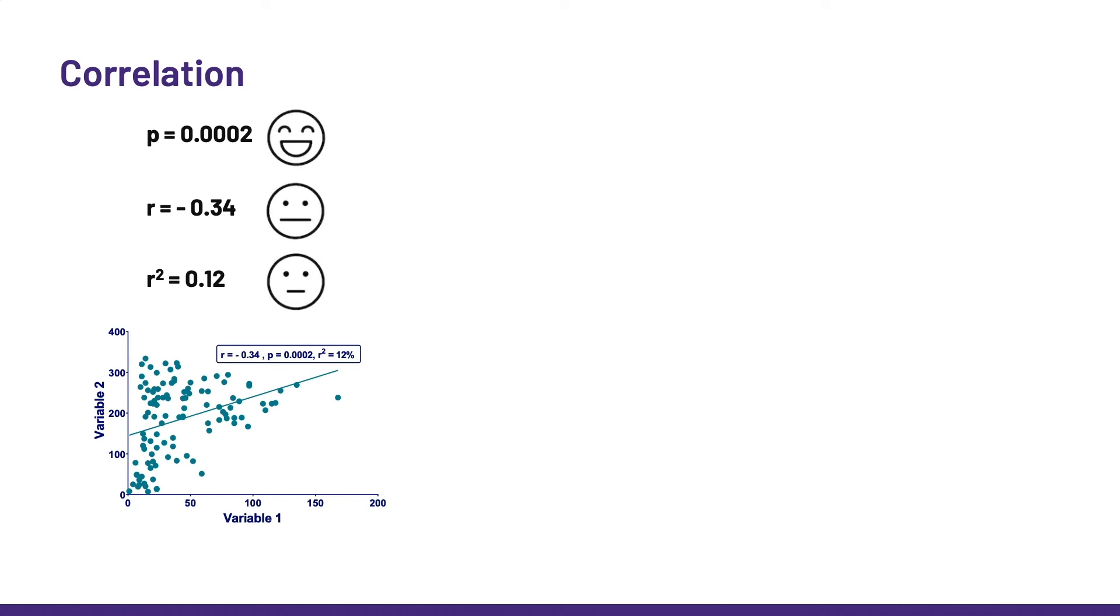Now, second scenario, same thing, we do not get to see the data, we only get the p-value, which is 0.04. So, we think, then we ask for r, which is minus 0.83. And we think, wow, yummy. And it gives an r-squared of almost 70%.